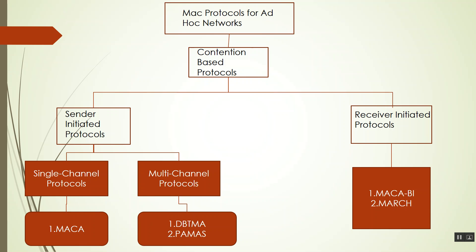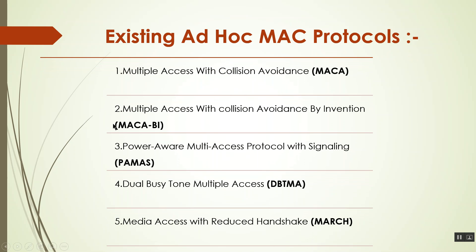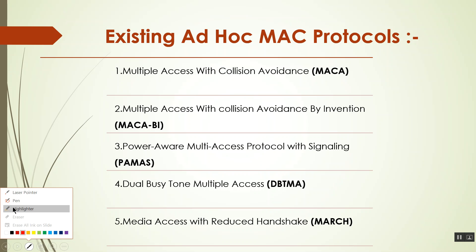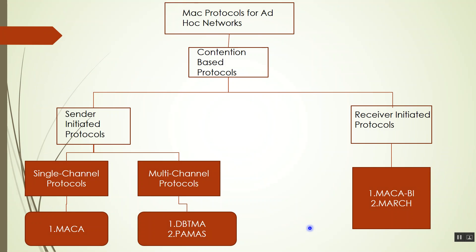There are five existing MAC protocols today. The first one is Multiple Access with Collision Avoidance, called MACA. The other is MACA-BI, which stands for Multiple Access with Collision Avoidance by Invitation. Third is Power Aware Multi-Access protocol with Signaling, called PAMAS, and DBTMA which stands for Dual Busy Tone Multiple Access. We can see that MACA comes under sender-initiated single-channel protocols, MACA-BI is a receiver-initiated single-channel protocol, and MARCH is also a receiver-initiated protocol.